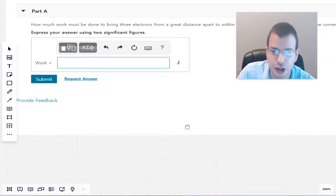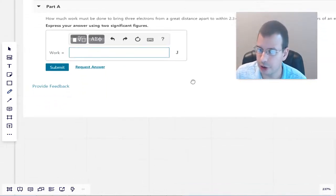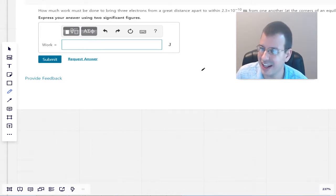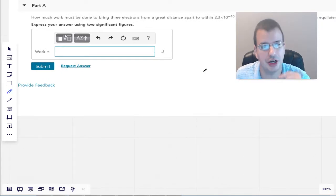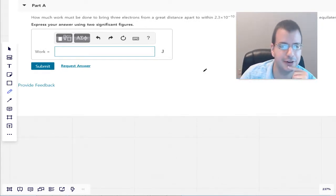How much work must be done to bring three electrons from a great distance apart to within 2.3 times 10 to the negative 10th meters from one another at the corners of an equilateral triangle? Express your answer using two significant figures.